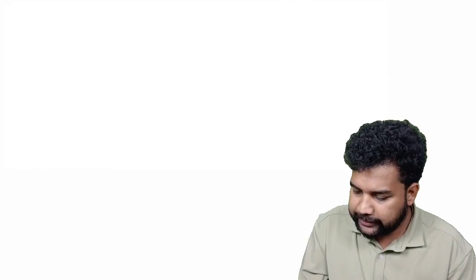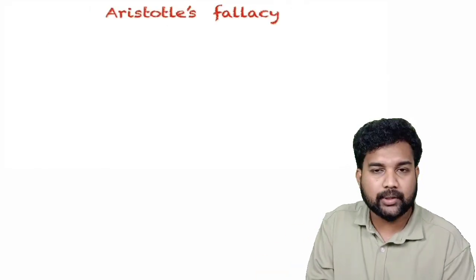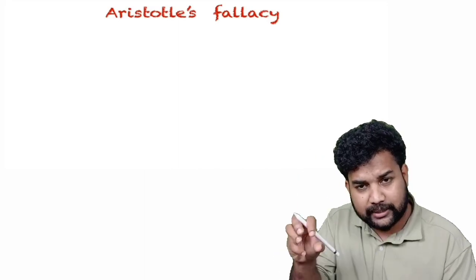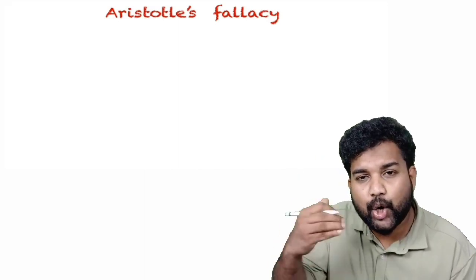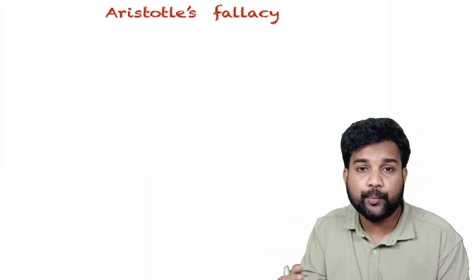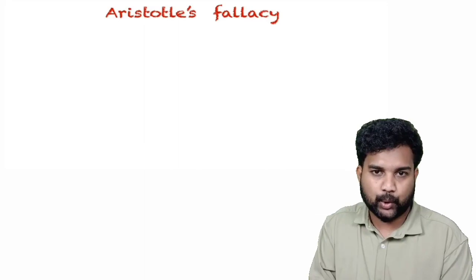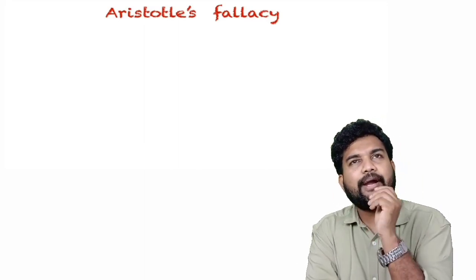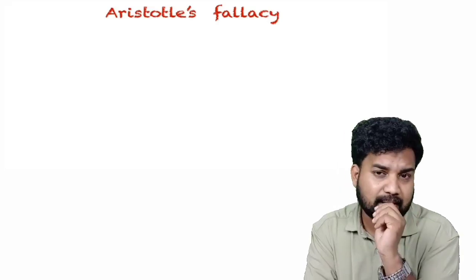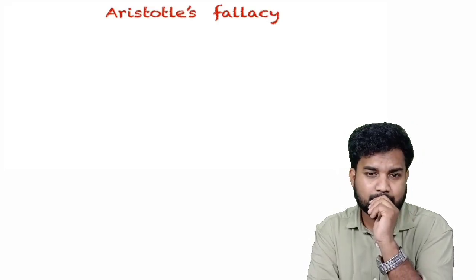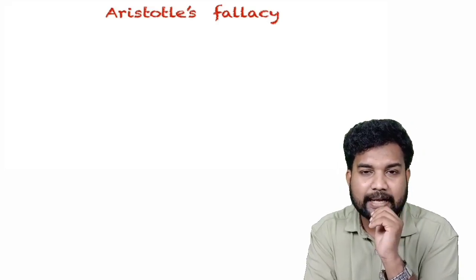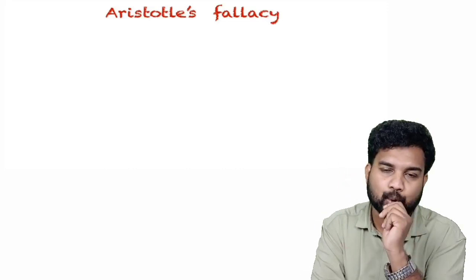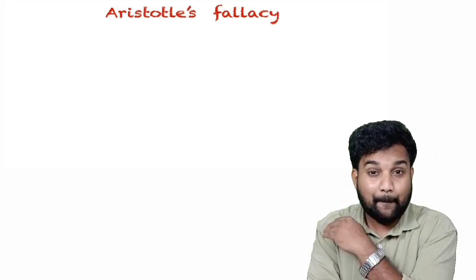Now we are going to study Aristotle's fallacy, followed by Galilean observations and Newton's first law. The meaning of fallacy is something that is wrong. Aristotle thought something that he did was not correct — he was completely wrong.